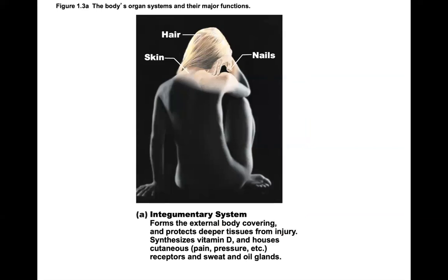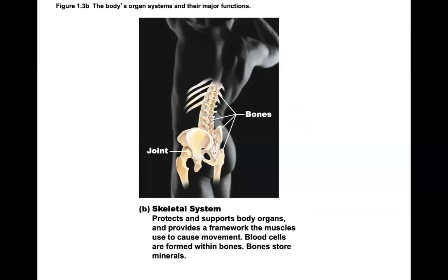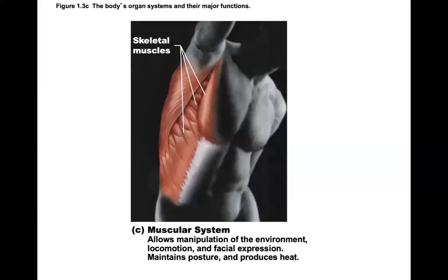The integumentary system forms the external body covering, protects deeper tissues from injury, is the site of vitamin D synthesis, and houses cutaneous receptors such as pain and pressure, as well as sweat and oil glands. The skeletal system protects and supports body organs, provides a framework for muscles to cause movement, contains blood cells within bone marrow, and stores minerals — most importantly calcium. The muscular system, primarily skeletal muscles, allows manipulation of the environment, locomotion, facial expression, helps maintain posture, and produces heat.